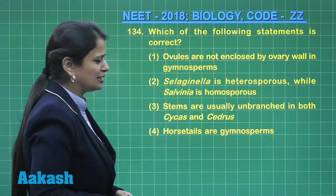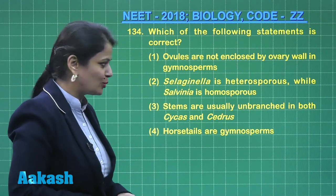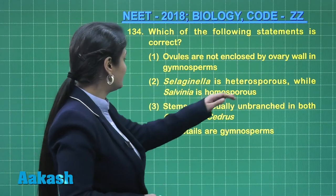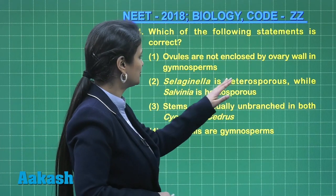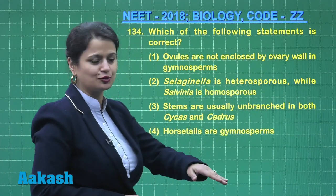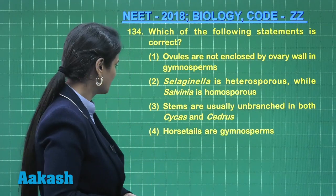Selaginella is heterosporous — that's quite right. While Salvinia is homosporous — this is wrong. Salvinia is again heterosporous.